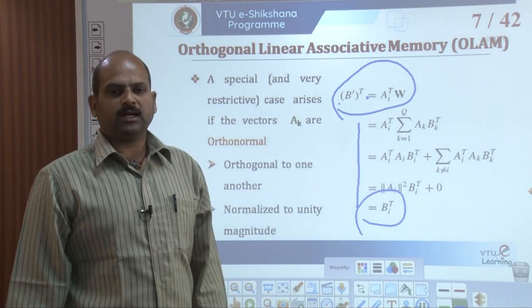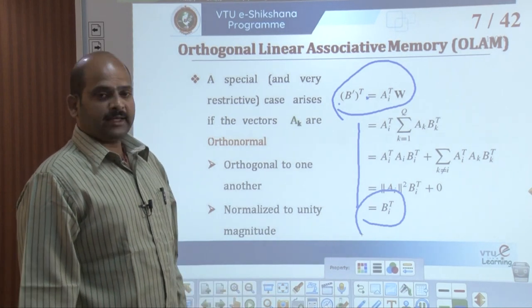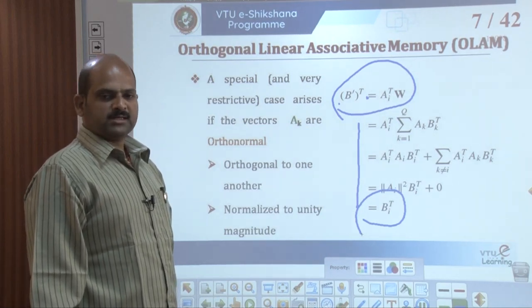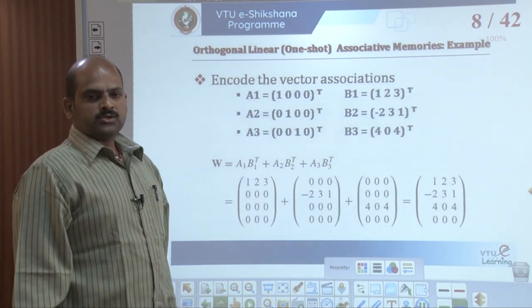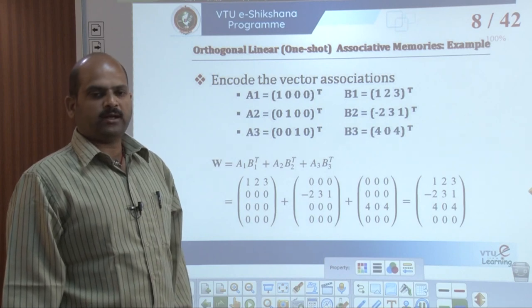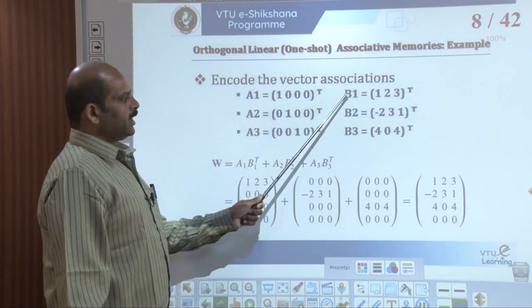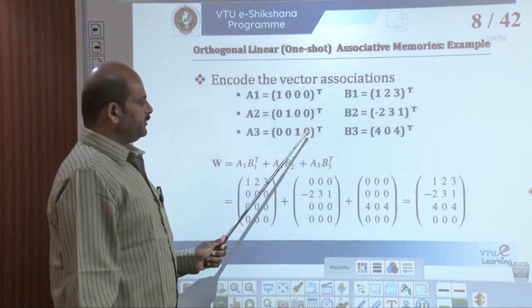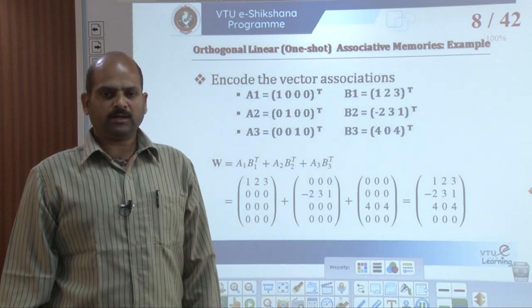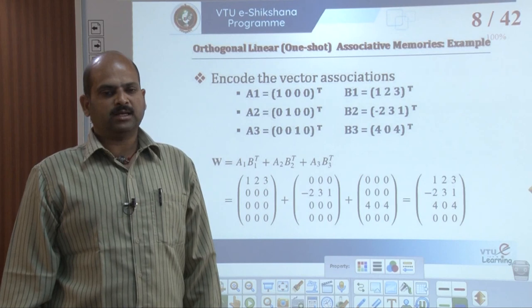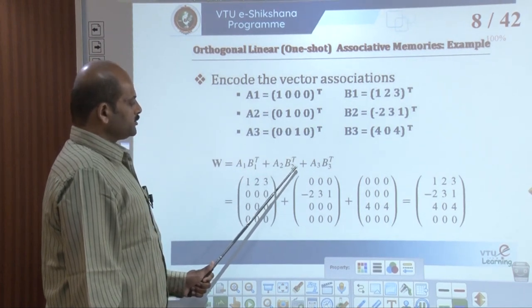What happens if vectors close to the encoded associations are presented to the network? To illustrate this, consider encoding three associations into an OLAM. The vector associations A1, A2, A3 and B1, B2, B3 are defined as column vector associations with specific values.